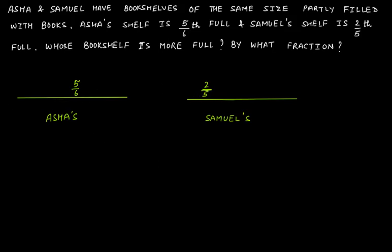We have 5/6 and 2/5. Clearly these two are unlike fractions. Why are they unlike fractions? Because they have different denominators. The denominators are not the same, and therefore in order to compare them, we will convert these two unlike fractions into like fractions.